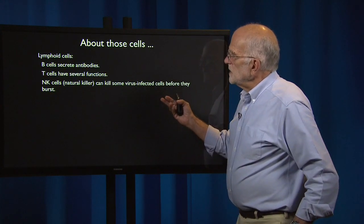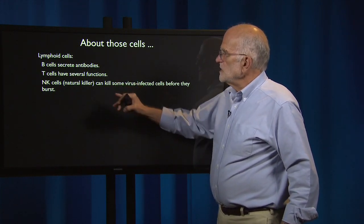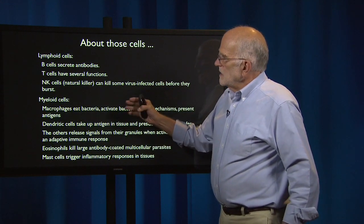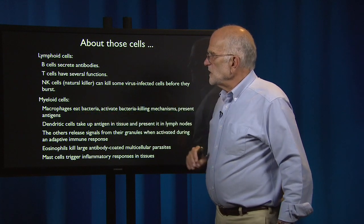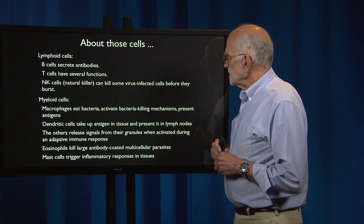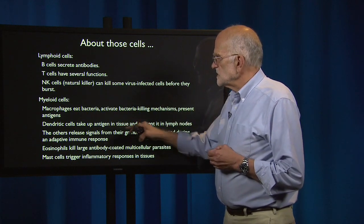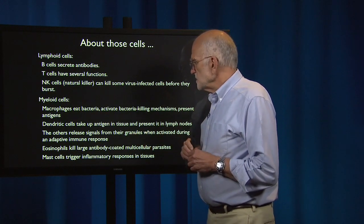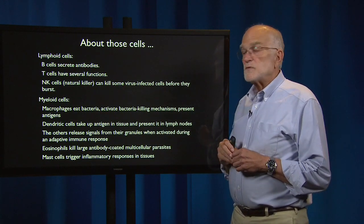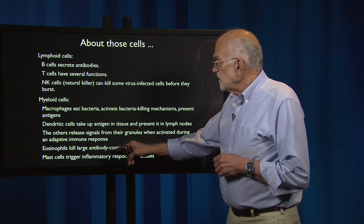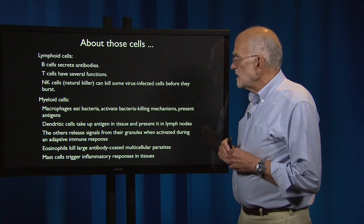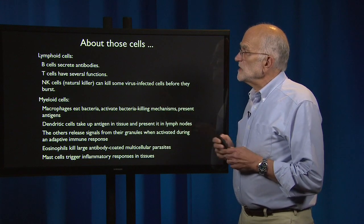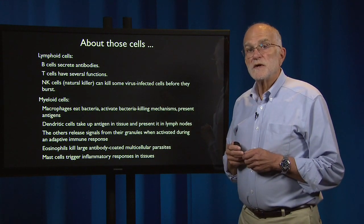B cells secrete antibodies. T cells have several functions. Natural killer cells can kill virus-infected cells before they burst. Among the myeloid cells, macrophages eat bacteria, activate bacterial killing mechanisms, and present antigens. Dendritic cells take up antigen in tissue and present it in lymph nodes. Eosinophils kill large antibody-coated multicellular parasites. Mast cells trigger inflammatory responses in tissues. These cells have specialized functions, and they coordinate their responses by talking to each other.